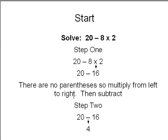So, 20 minus 8 times 2. Step 1: 20 minus 8 times 2 is 20 minus 16. There are no parentheses, so multiply from left to right, then subtract. Step 2: 20 minus 16 equals 4, which is the answer.